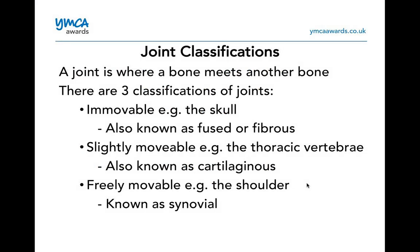Joint classification: there are three classifications. You've got immovable, fused, or fibrous joints. You've got slightly movable — like the thoracic vertebrae — also known as cartilaginous joints. And then you've got your freely movable joints, which are known as synovial joints. The shoulder is the best example because you can do various different moves with your shoulder joint.